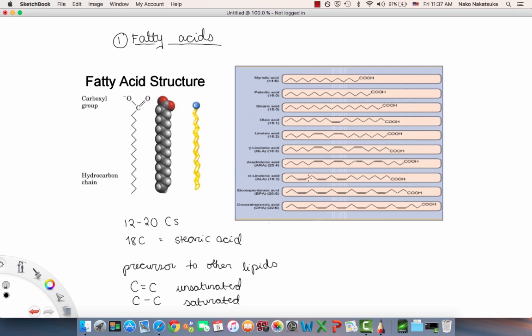Unsaturated fatty acids can be called monounsaturated if it only contains one carbon-carbon double bond and they're called polyunsaturated if they contain more than one double bond. When looking at the double bond the cis conformation is more common than trans.